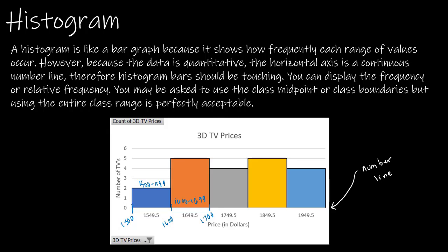In terms of how to label your horizontal axis, which is the number line, I'm totally fine with you keeping the range of values that includes the lower class limit and the upper class limit. Often textbooks will also ask you to find the class midpoint or class boundary. But for me, you can use the entire range.